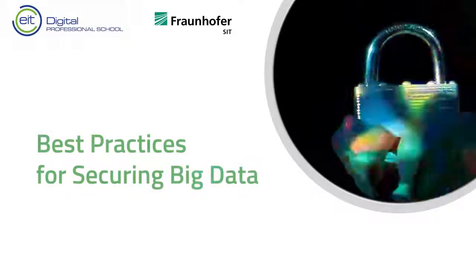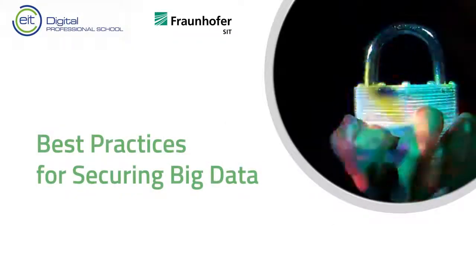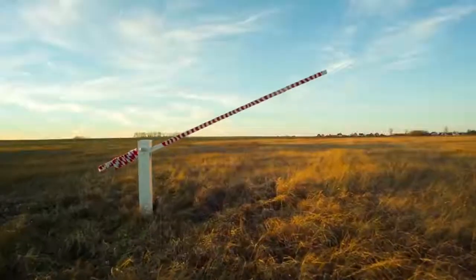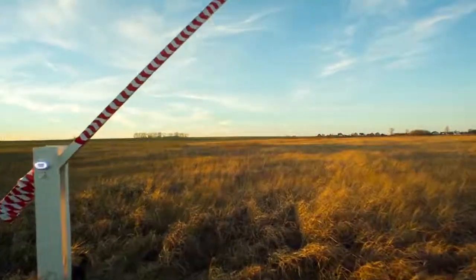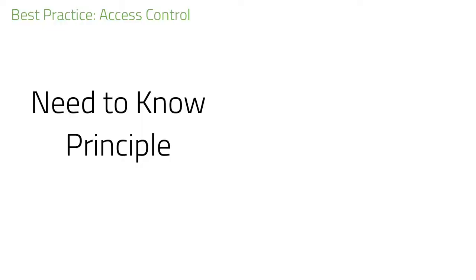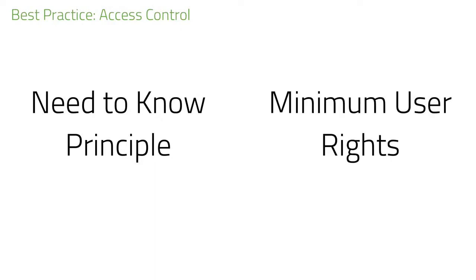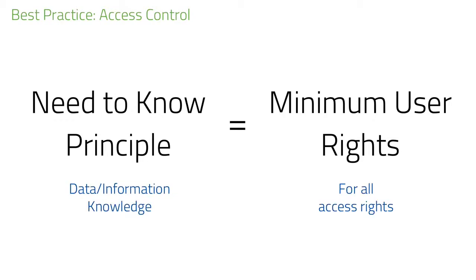Best practices for securing big data. Firstly, when organizing access control processes, try to abide by the need-to-know principle and the rule of minimum user rights. Both principles can be seen as equivalent to one another, although the need-to-know principle applies more specifically to data, information and knowledge, while minimum user rights can apply to any kind of access rights.